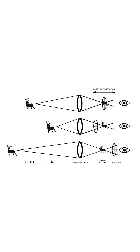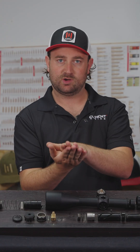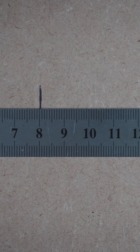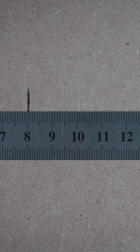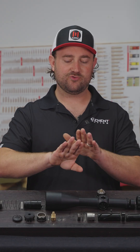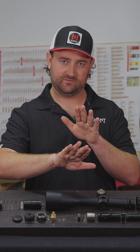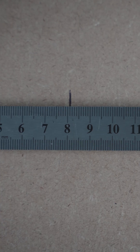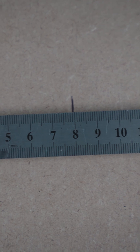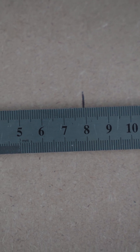We've all experienced parallax error at some point, let's say when trying to measure something with a ruler. If your ruler is flat against the object that you're trying to measure, then you can change your perspective and you're still going to get the same measurement. However, if you raise the ruler off the surface of whatever you're trying to measure and then you change your perspective, you'll see that you can't get a precise measurement anymore.